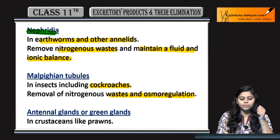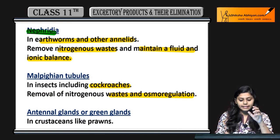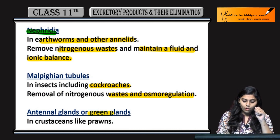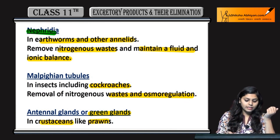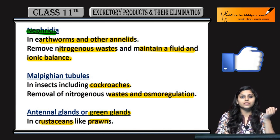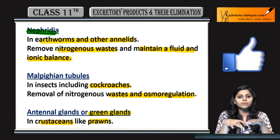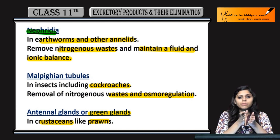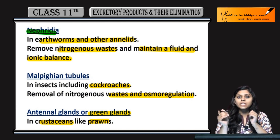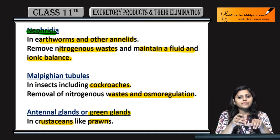Antennal glands aur green glands crustaceans mein present hote hain, jaise prawns. Is chapter mein humne briefly dekha hai excretory products aur excretory structures — invertebrates aur vertebrates ke. Is chapter mein hum detail mein study karenge human excretory system aur kidney ke baare mein.